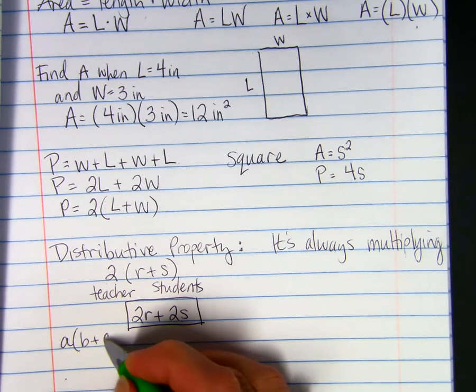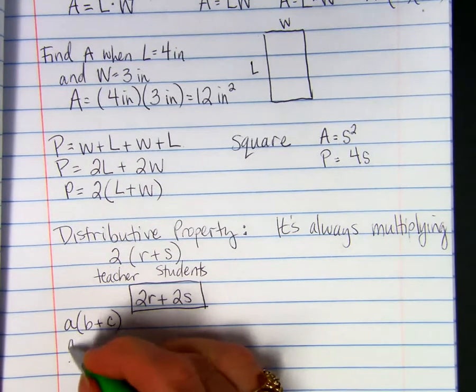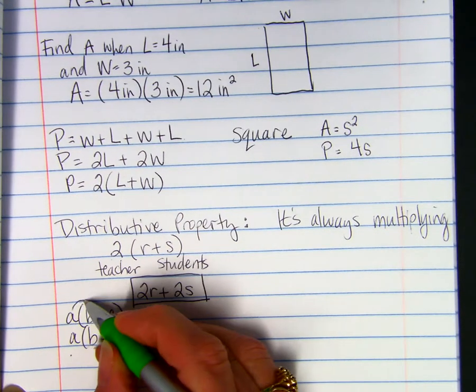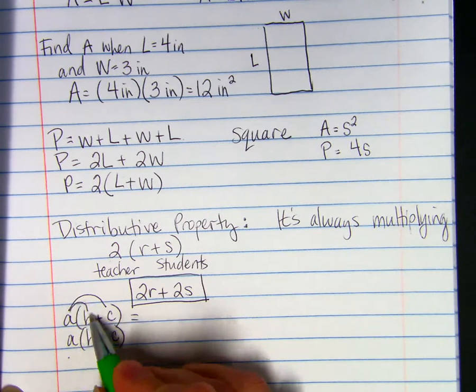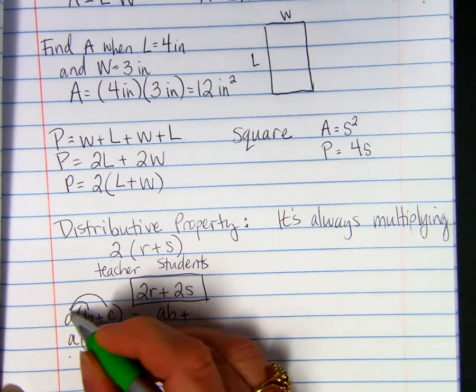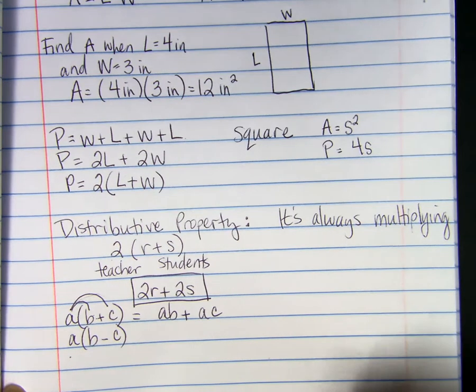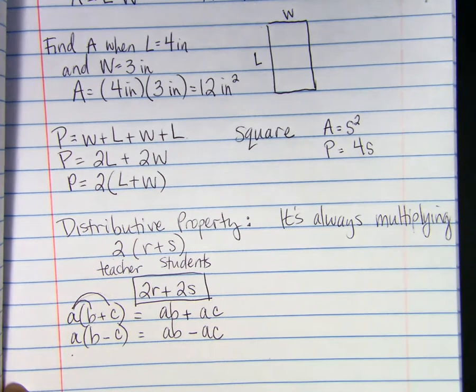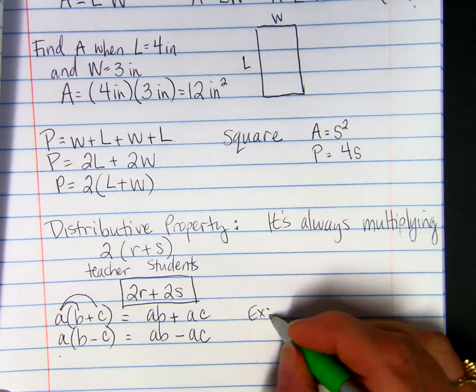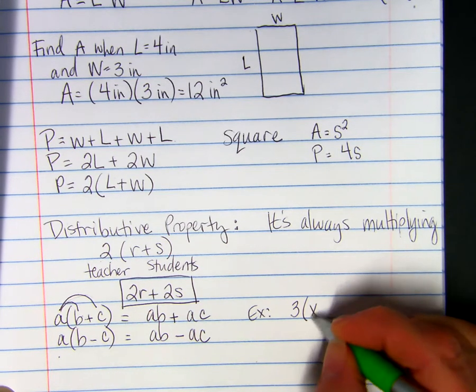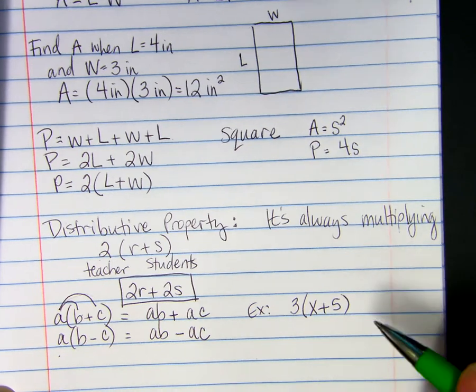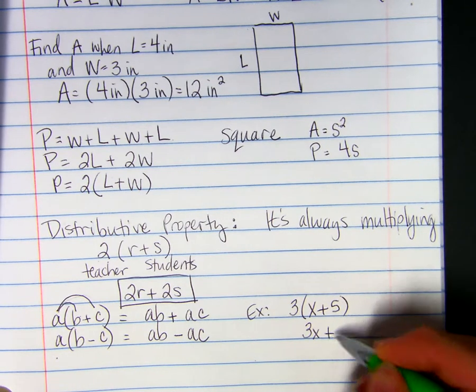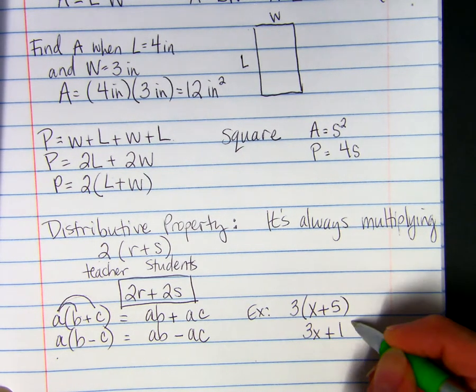If we put in some variables here, A times B plus C or A times B minus C, we're going to distribute. We do A times B plus A times C. Or if there's a subtraction sign, it would be A times B minus AC. Here's an example. Three times, in parentheses, X plus five. We distribute the three over addition. We do three times X plus, and then we're going to do three times five, which is 15. So, these two statements are equivalent. They mean the same thing.